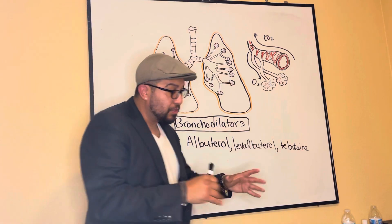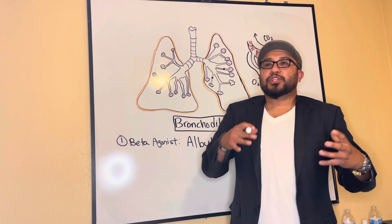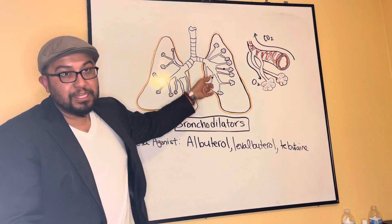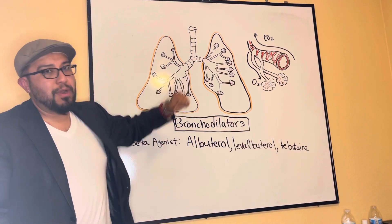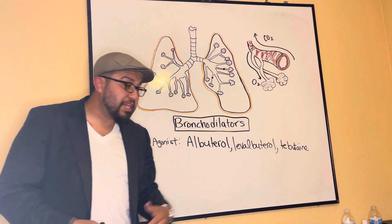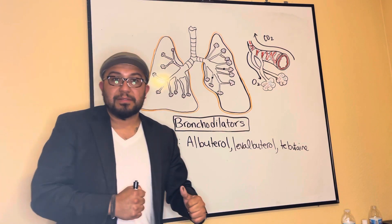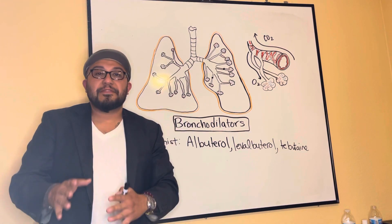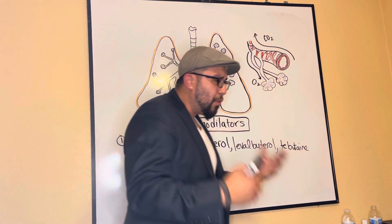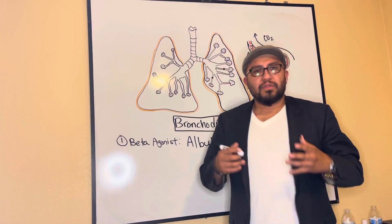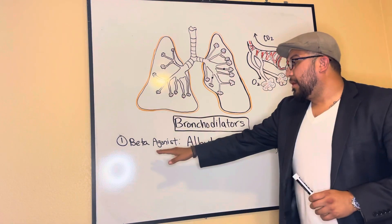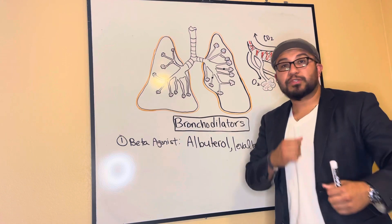Most of our drugs work by activating a mechanism that gives us a therapeutic effect to resolve the issue. In this case, the issue is bronchoconstriction — the airways are constricting and we need to open them up. So we give medications that enhance the fight-or-flight mechanism. Think about what the medication is doing, what system it's activating, and what it's carrying out to provide therapeutic effect and airway patency.